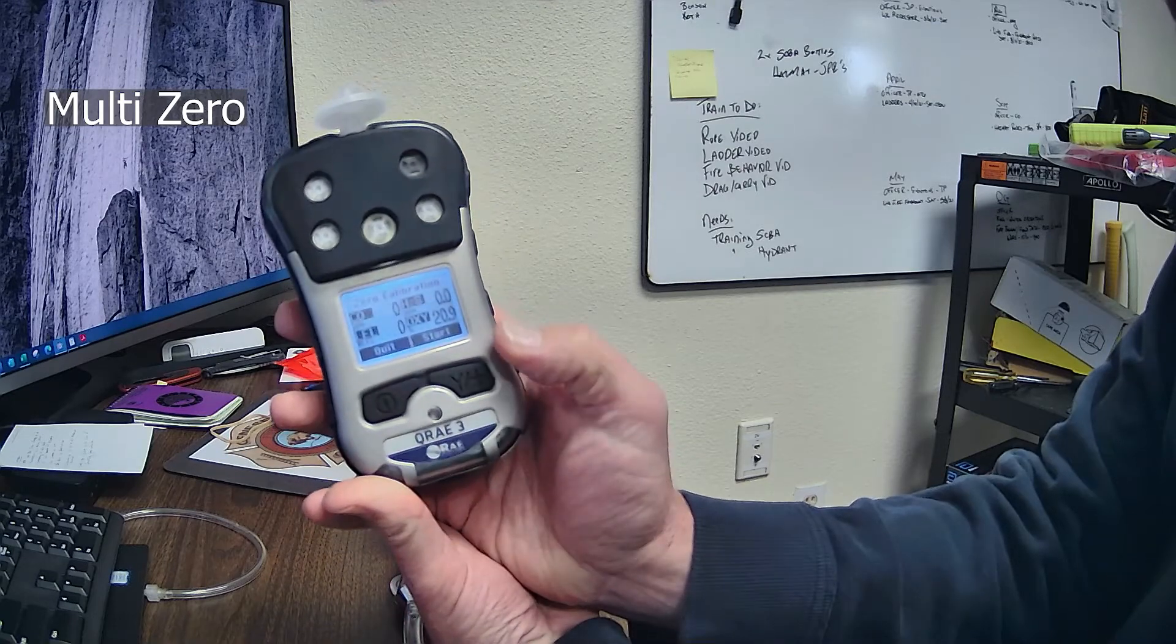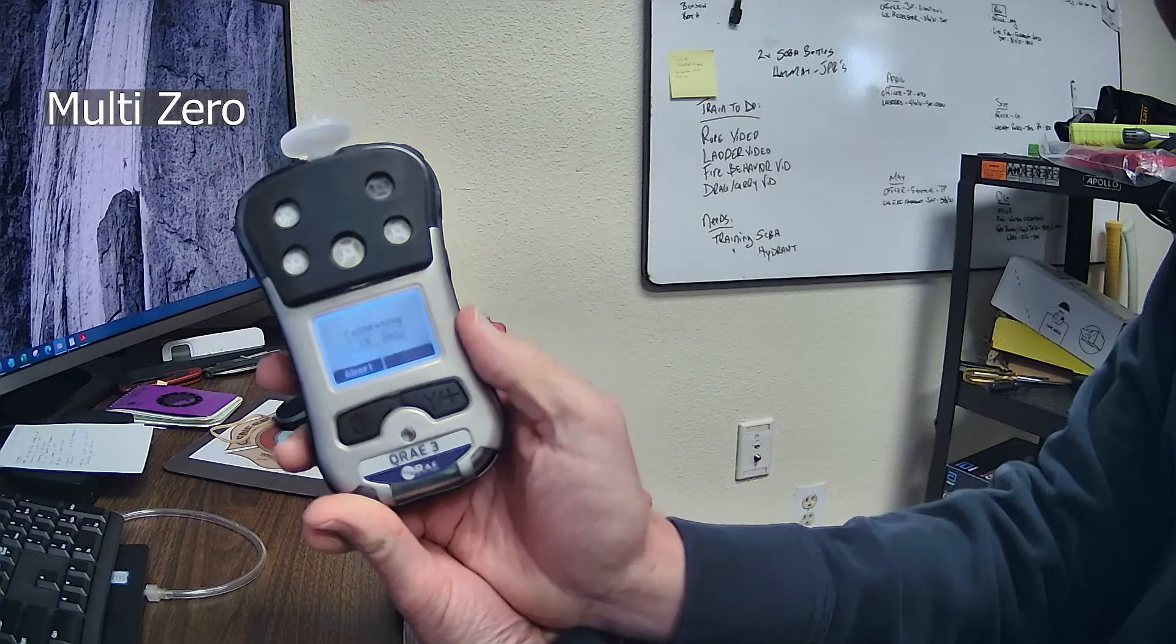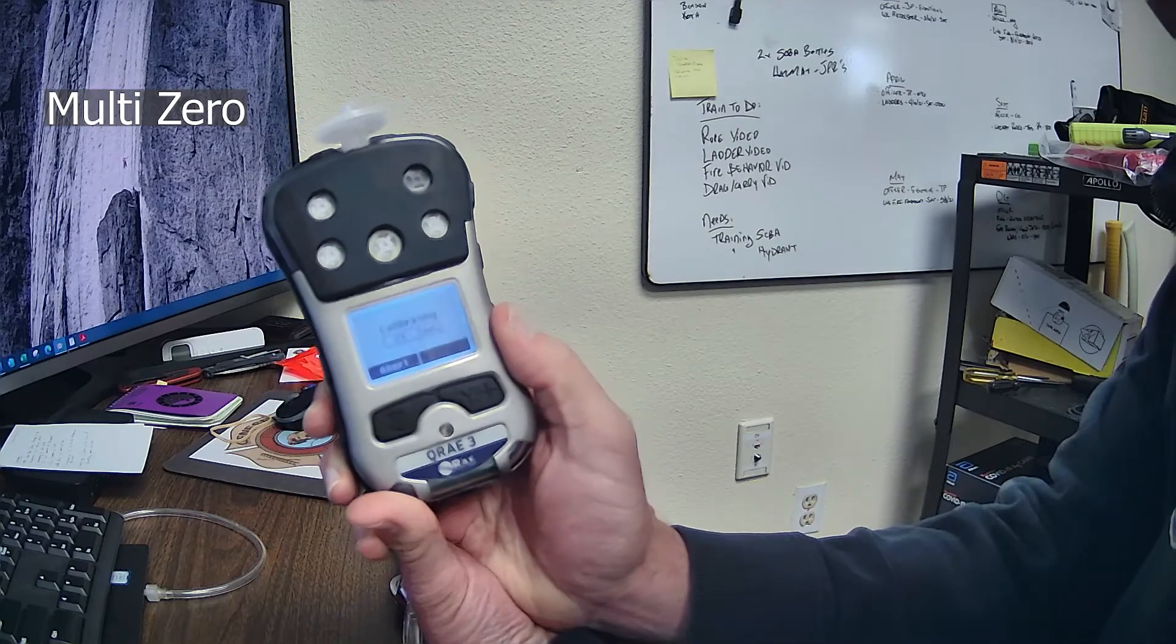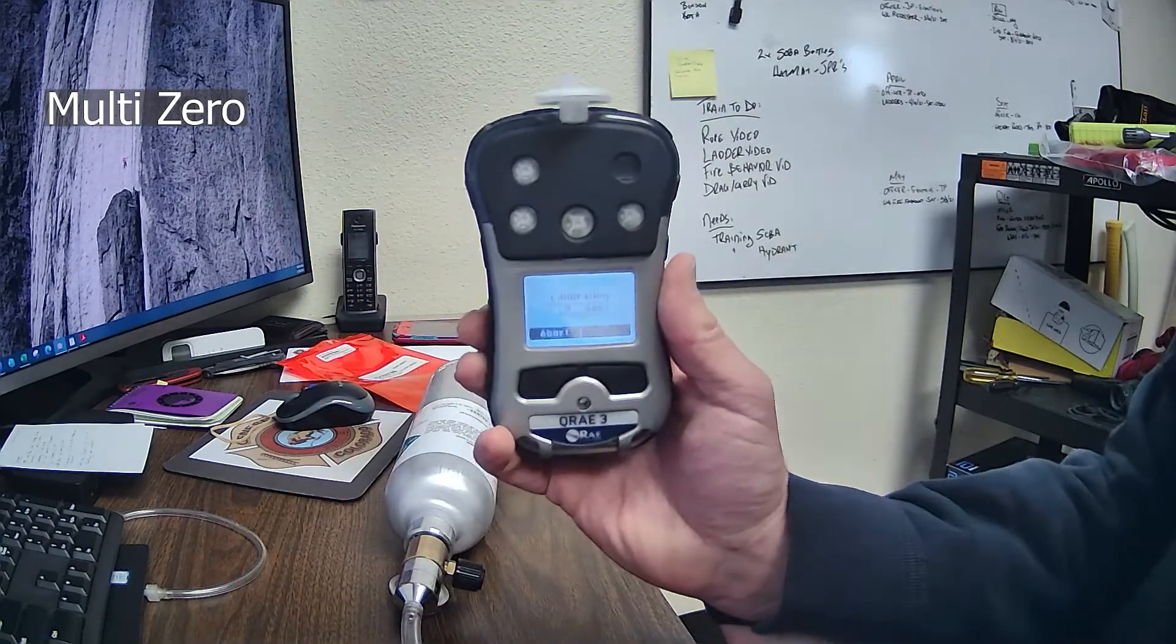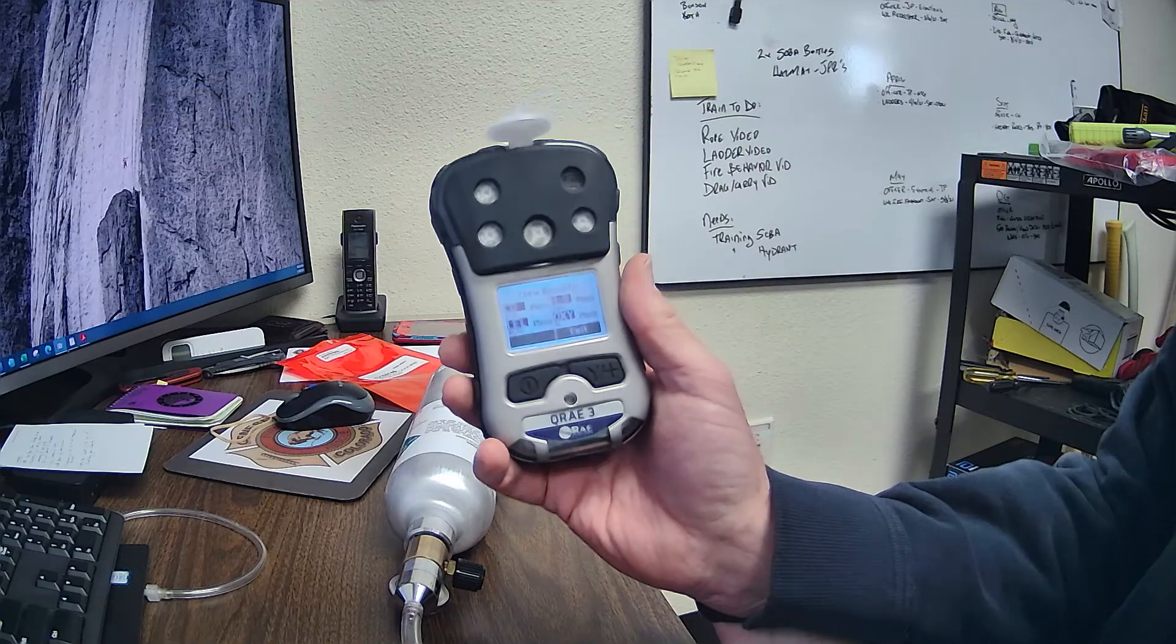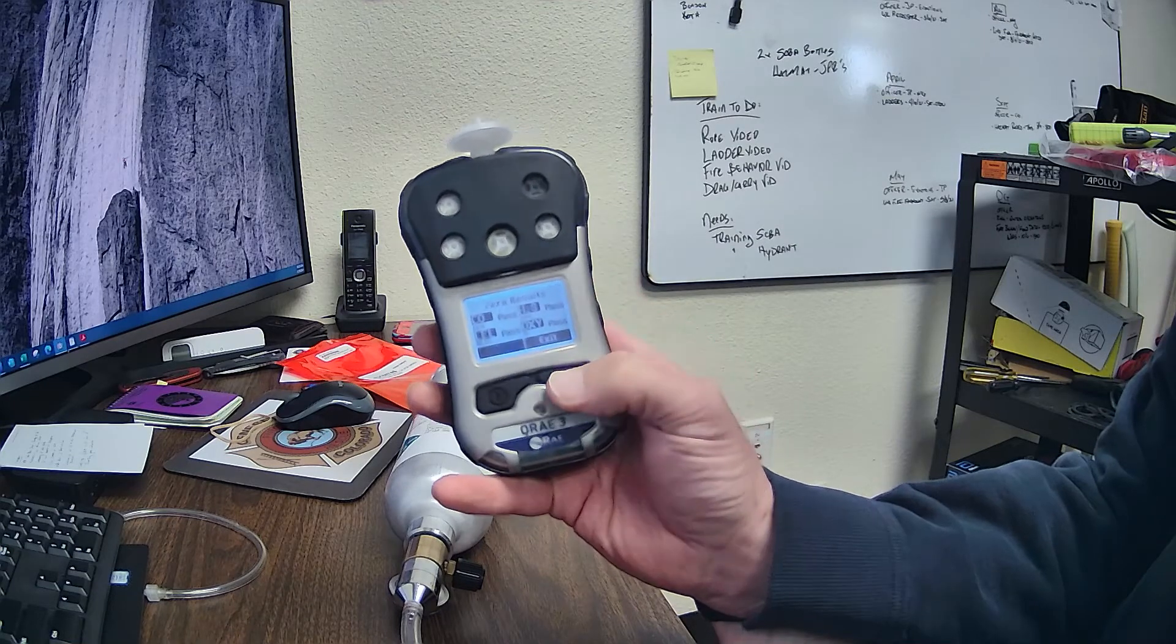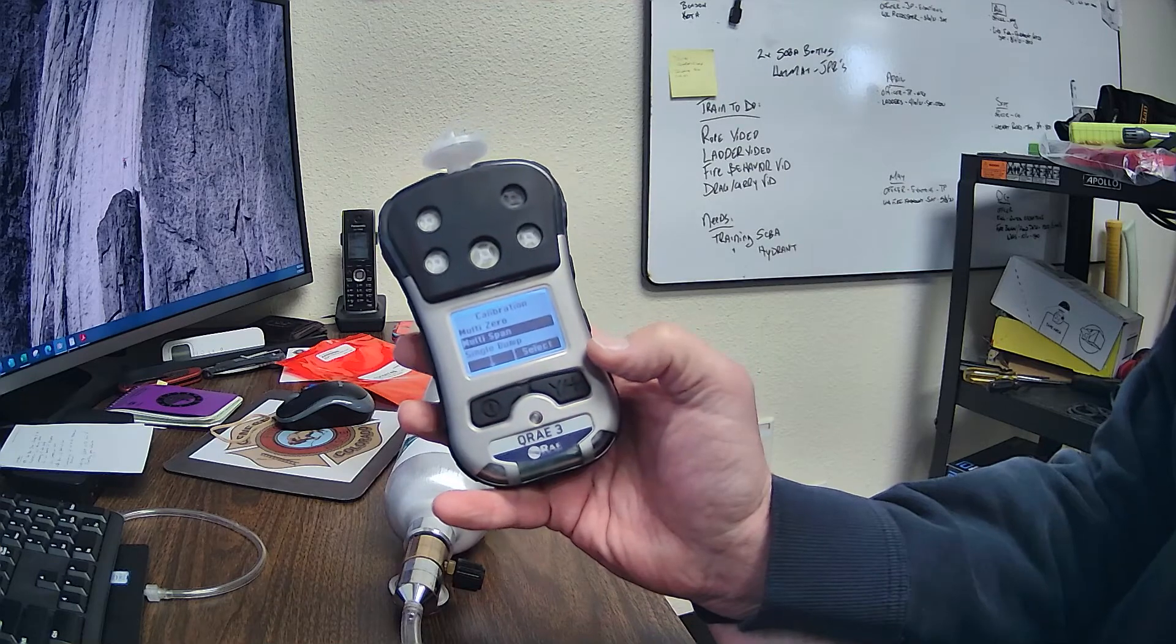So, go to multi-zero and hit that, and then the right-hand side says start, and you want to go ahead and start. So, it's going to zero everything out. It takes about 30 seconds. All right, zeroed it out, oh, wonderful, so it looks good. Everything passed on the zero, that's great. So, we're going to go ahead and exit, but we still need to do more work.